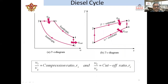This is the PV and TS diagram in which all the processes are shown. Process 1 to 2 is isentropic compression, already discussed. Process 2 to 3 is constant pressure heat addition, where combustion takes place at constant pressure. Process 3 to 4 is isentropic expansion after combustion. Process 4 to 1 is constant volume heat rejection. So there are four processes.